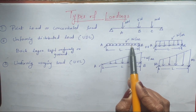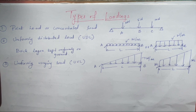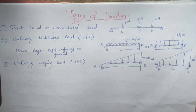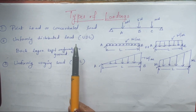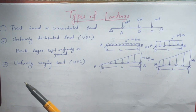UDL is a load uniformly acting throughout a length — every point has the same value W over the length L. An example is a layer of bricks arranged on a ground surface: each brick has the same weight, so the same load acts throughout the length where the bricks are placed. In problems, we convert UDL into a point load.